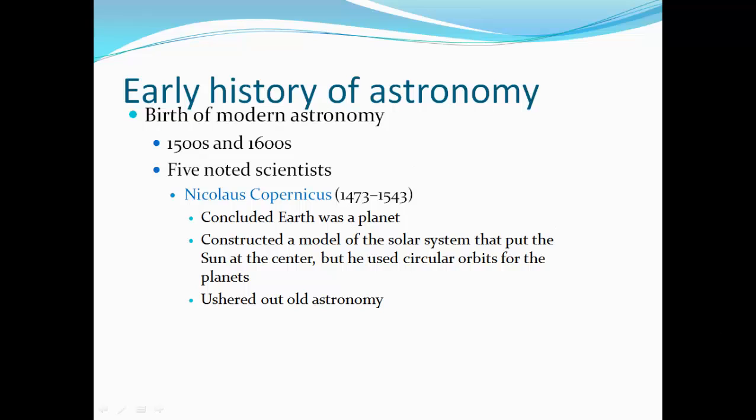In the 1500s and 1600s, we had five noted scientists. Nicolaus Copernicus, from 1473 to 1543, he concluded the Earth was a planet. He constructed a model of the solar system that put the Sun at the center, but he used circular orbits for the planets, and that ushered out the old astronomy.